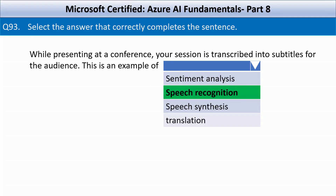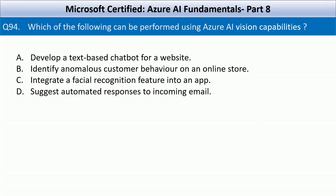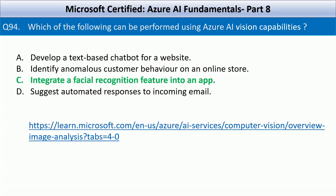Question number 94. Which of the following can be performed using Azure AI vision capabilities? Your options are: develop a text-based chatbot for a website, identify anomalous customer behavior on an online store, integrate a facial recognition feature into an app, suggest automated responses to incoming email. Azure AI vision provides capabilities to analyze visual content, including facial recognition, object detection, image tagging, and text extraction from images.